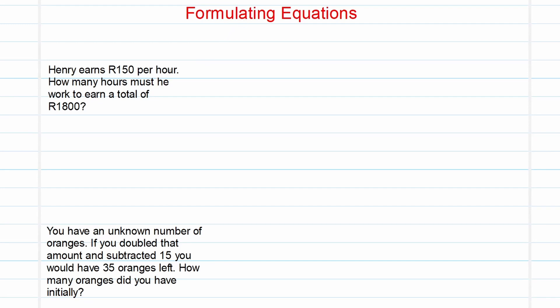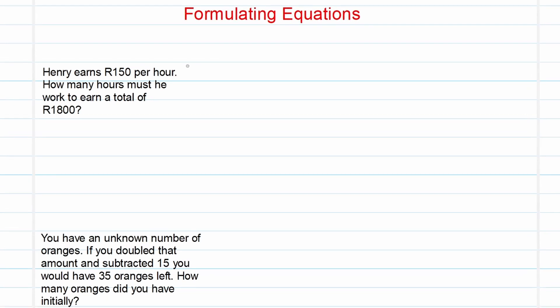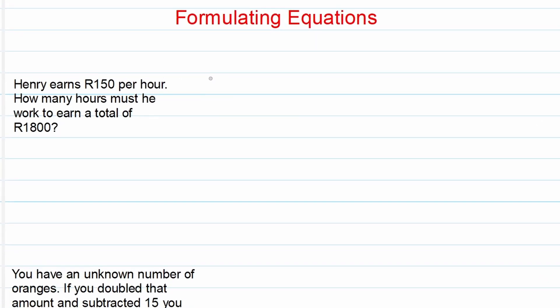Lastly, formulating equations. Now this is when we've got a word problem. Like over here. Henry earns 150 rand per hour. How many hours must he work to earn a total of 1,800? So what we want to do is we want to go from words to variables. That's what we are going to do. So we say, he works an unknown amount of hours. So it's x times 150. For each hour he receives 150 rand. And in total he receives 1,800 rand.